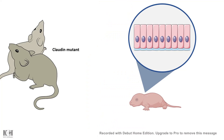In claudin mutant mice where claudin production is inhibited or eliminated, there is no tight junction in the epithelial barrier of the skin. As a result, there is an immense amount of evaporation taking place from the skin, and the pups die at an early age. This demonstrates that claudin in the tight junction is critically important for ensuring that fluid passage happens in a directed and controlled fashion.